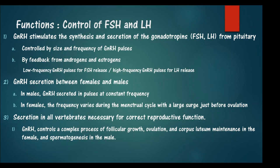GnRH secretion differs between males and females. In males, GnRH is secreted in pulses at a constant frequency, such as every 1, 10, or 12 minutes. In females, the frequency varies according to the menstrual cycle, and just before ovulation there is a high increase in GnRH pulsing. Secretion in all vertebrates is necessary for correct reproductive function.